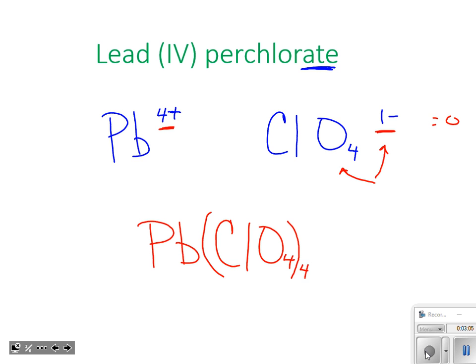Another thing I commonly see wrong: people don't use subscripts, they use superscripts. Superscripts are where we put charges, ladies and gentlemen, they're not where we put how many of the compound or of the ion we have. So right here, final answer: Pb(ClO4)4. This makes my net charge equal to zero.